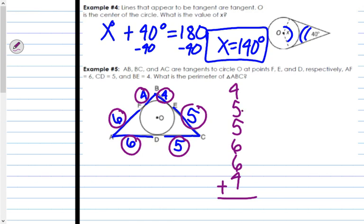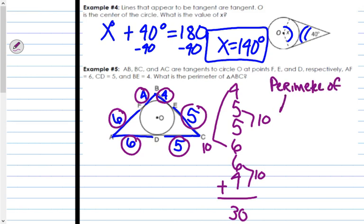So, I know 5 plus 5 is 10. I know 6 plus 4 is 10. And 6 plus 4 is 10. So, all together, the perimeter is 30. 10 plus 10 plus 10 is 30. So, the perimeter of triangle ABC is 30. And that's your answer.